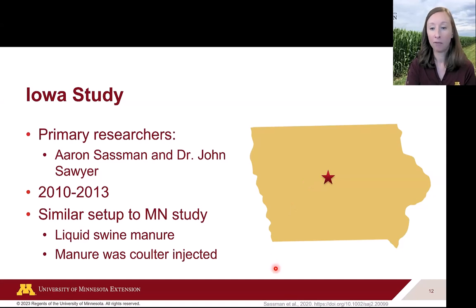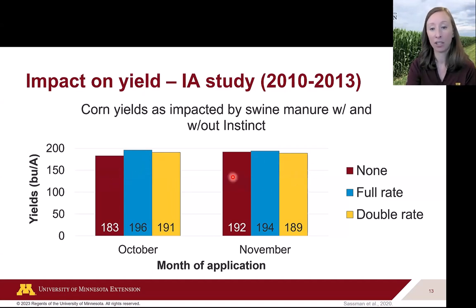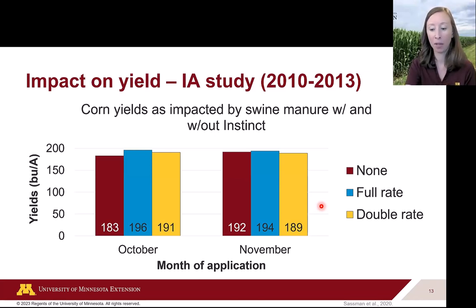In Iowa, Dr. John Sawyer and Aaron Sasman carried out a very similar research project from 2010 to 2013. The setup was similar to Minnesota except manure was coulter-injected rather than with sweeps. They found pretty much the same thing: no statistical differences in October or November, but a similar trend where yield tended to be higher where Instinct was applied in October compared to where it was not. In November, yields were very similar across treatments.